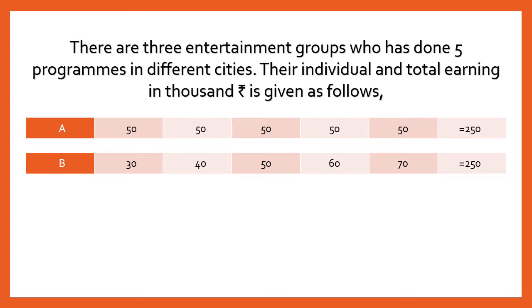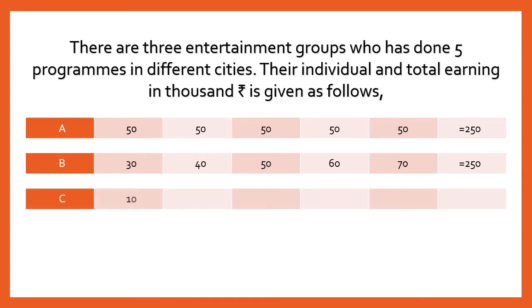Group C earned 10,000 in the first program, then 35,000, then 50,000, then 65,000, and 90,000 rupees — again making a total of 250,000. So the data is different across groups even though the totals are the same.